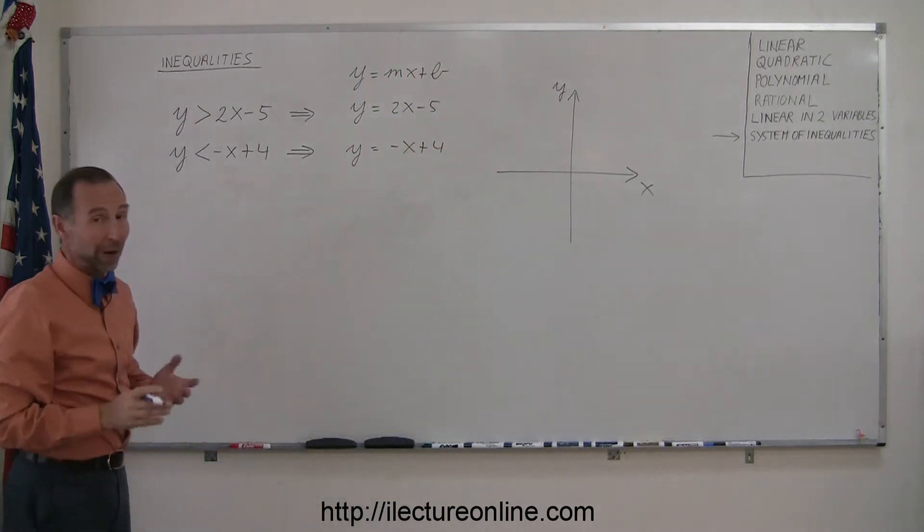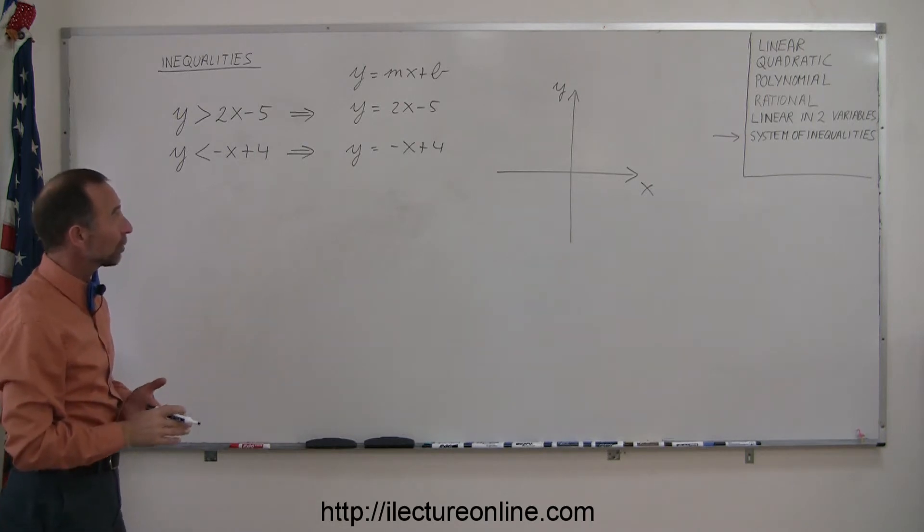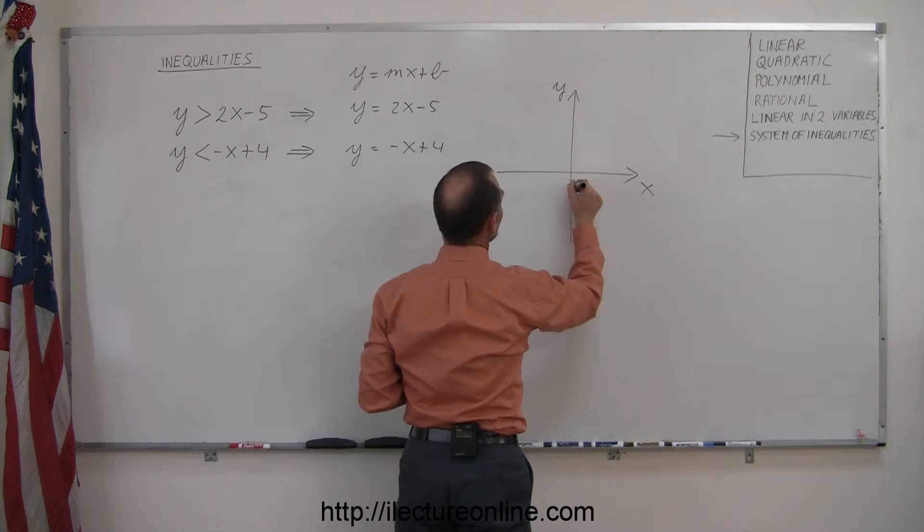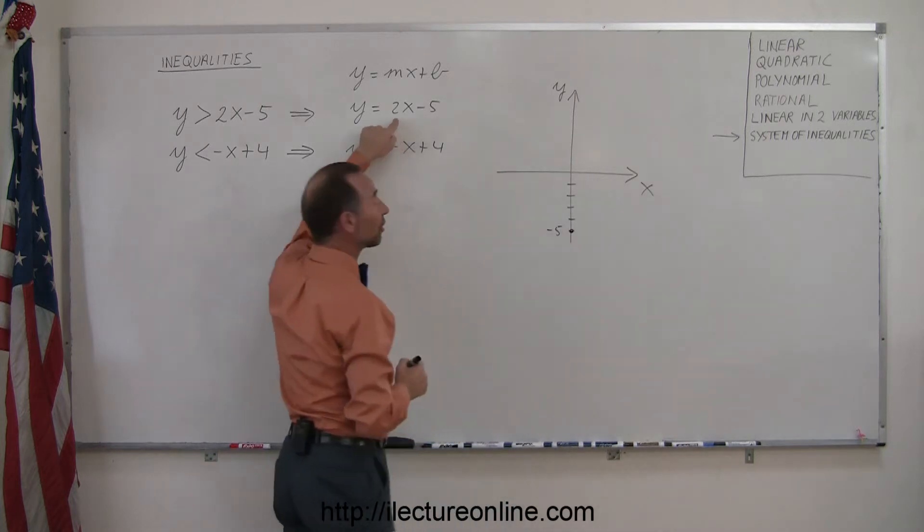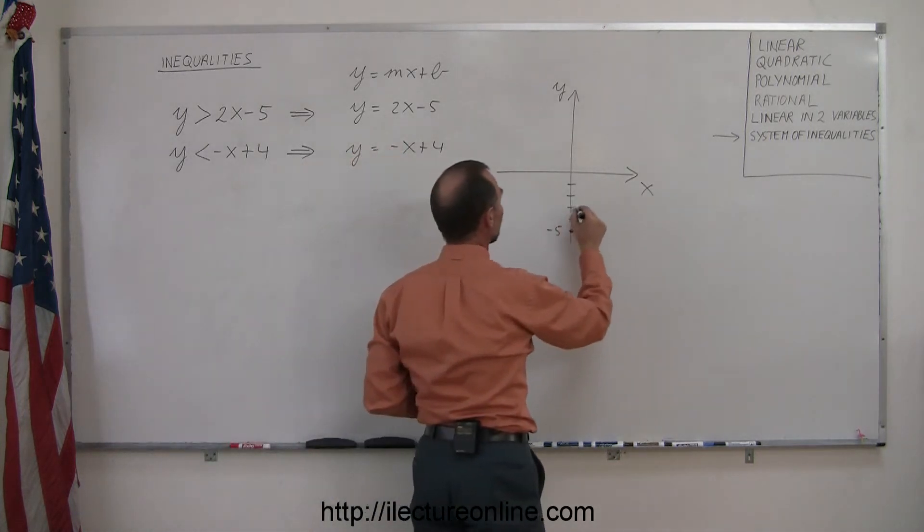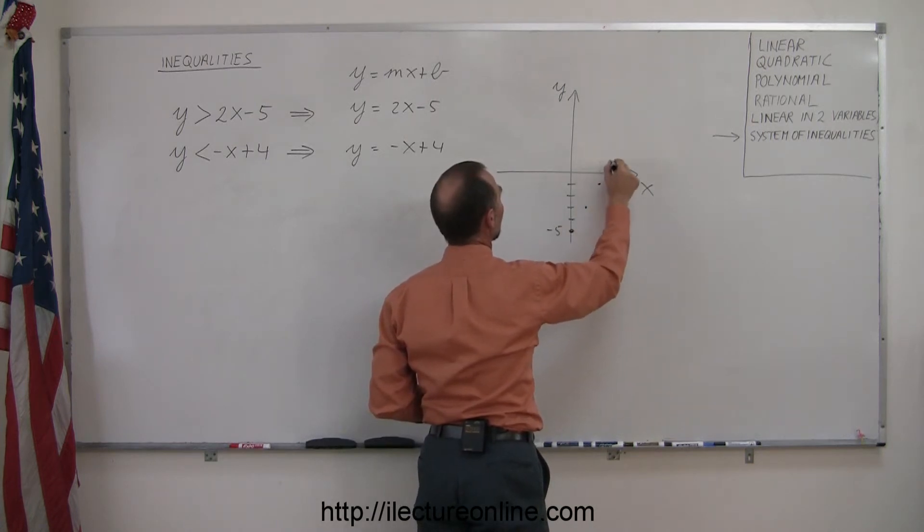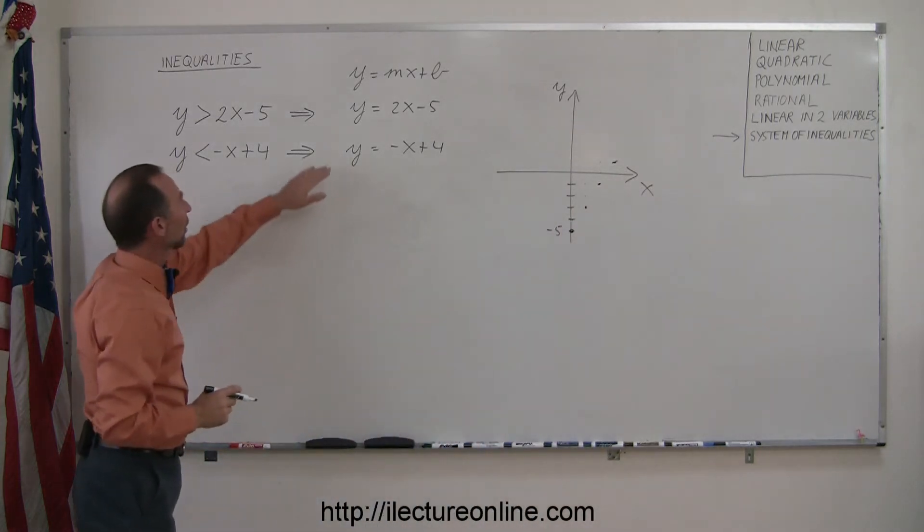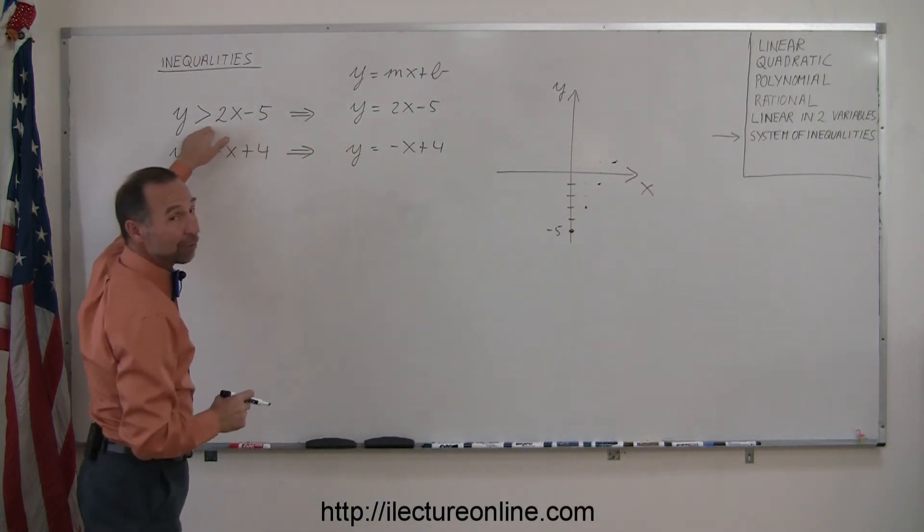And so we can graph those by first finding the intercept of each. So starting with the first equation here, the intercept y equals negative 5, negative 1, negative 2, negative 3, negative 4, negative 5, right here. And the slope is a positive 2, which means you rise 2 and run 1. So go up 2, go over 1, go up 2, go over 1, go up 2, go over 1. And then you can combine all those points, which represent this line, which represents the boundary for this inequality.